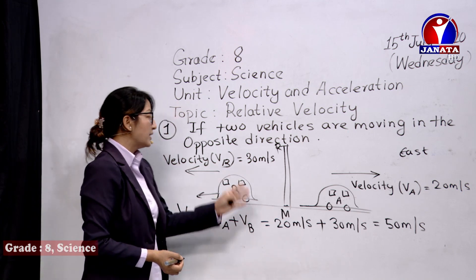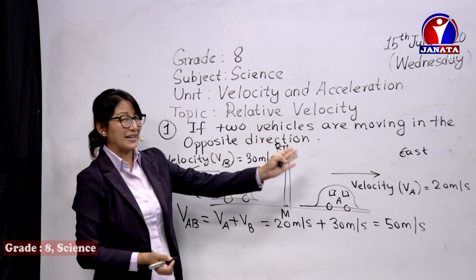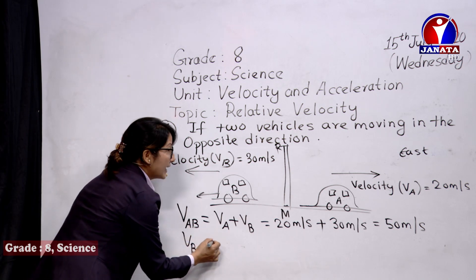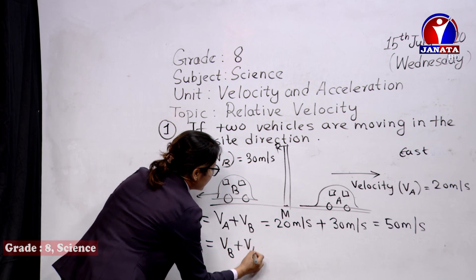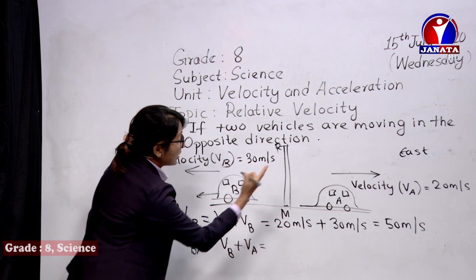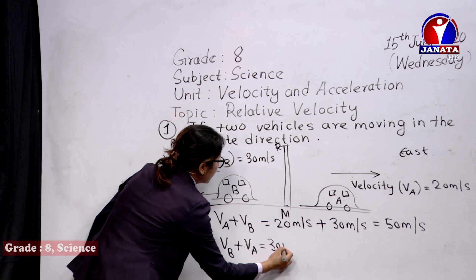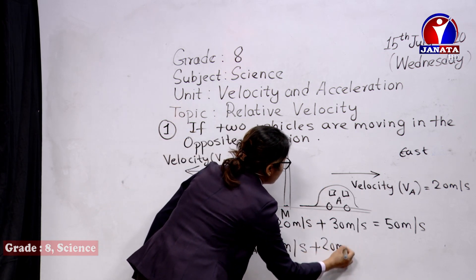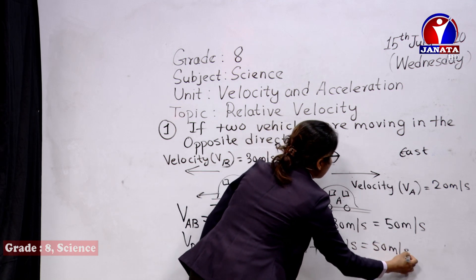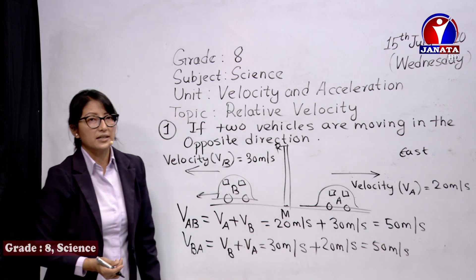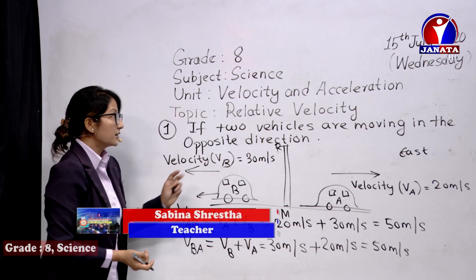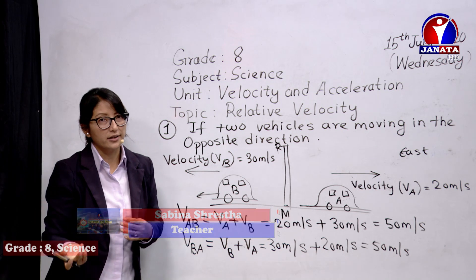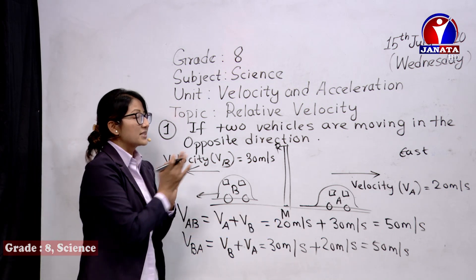Similarly, the relative velocity of B with respect to A is VBA equals VB plus VA, which is 30 plus 20 equals 50 meter per second. So this is how we calculate the relative velocity of one body with respect to another. Now, if they are moving with the same velocities in the same direction, it is very simple.